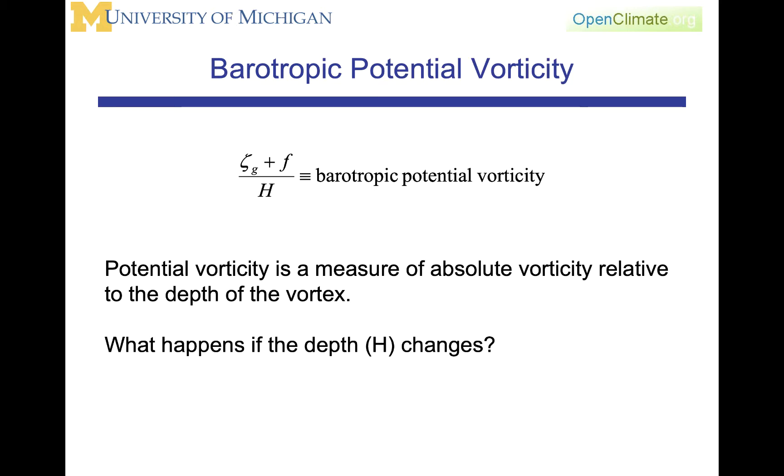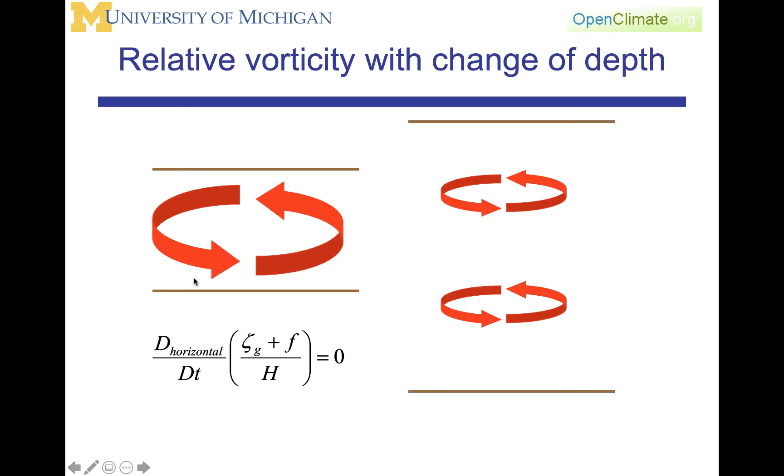And we start to see this very important relationship between the rotation of the earth and the rotation of a weather system on the surface of the earth. How would we think about this? If we now have that zeta_g plus f over H is going to be constant with time following a parcel or following the vortex.